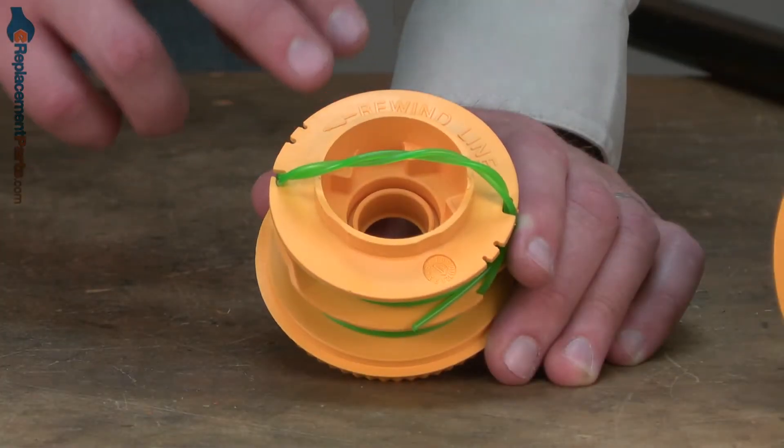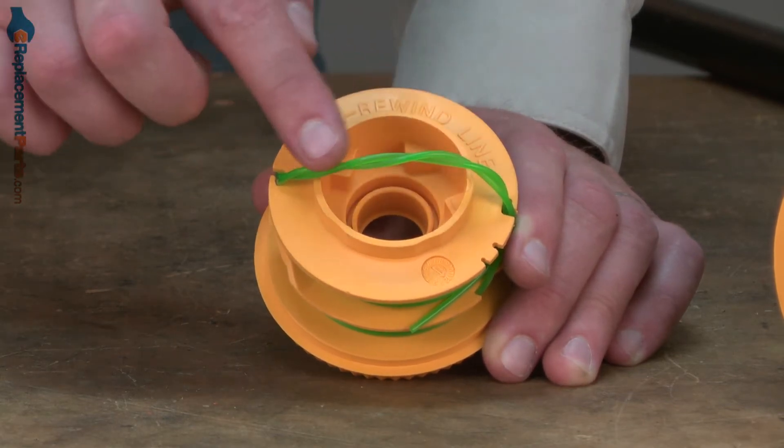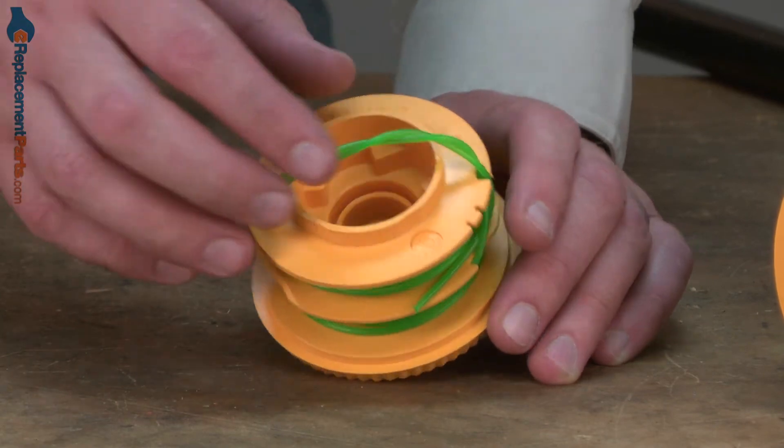Now I'll install the spool. The spool comes pre-packaged with trimmer line already on it and often the two lines are twisted together. This is just for shipping.